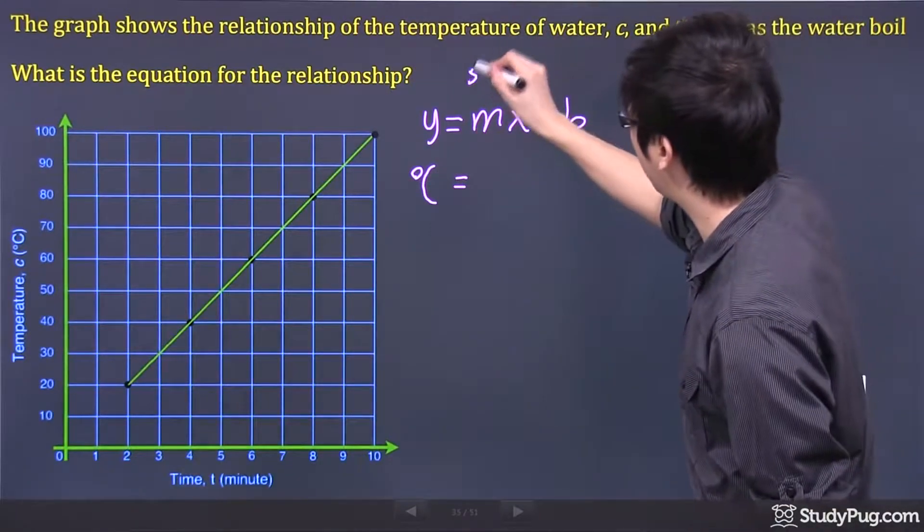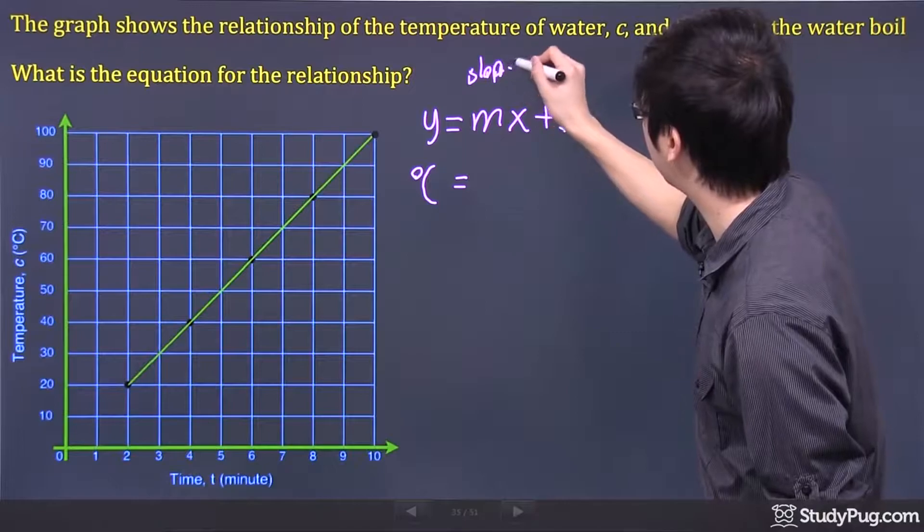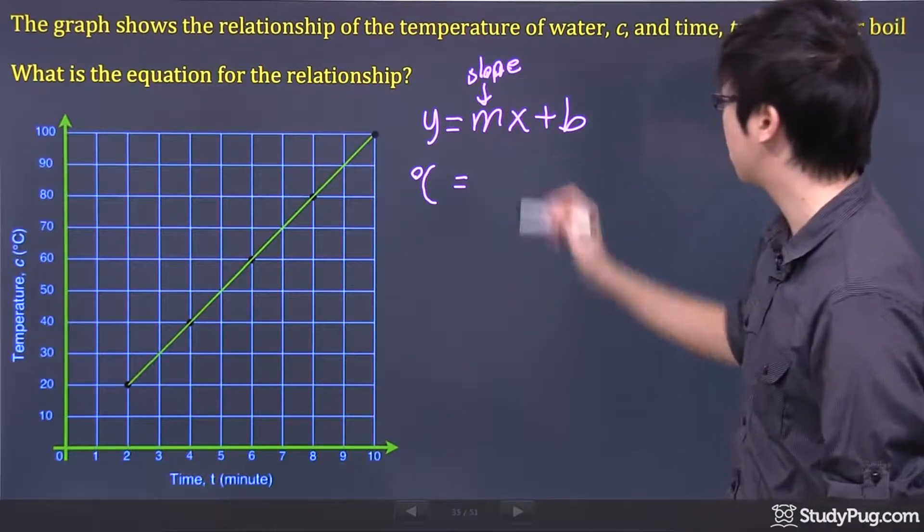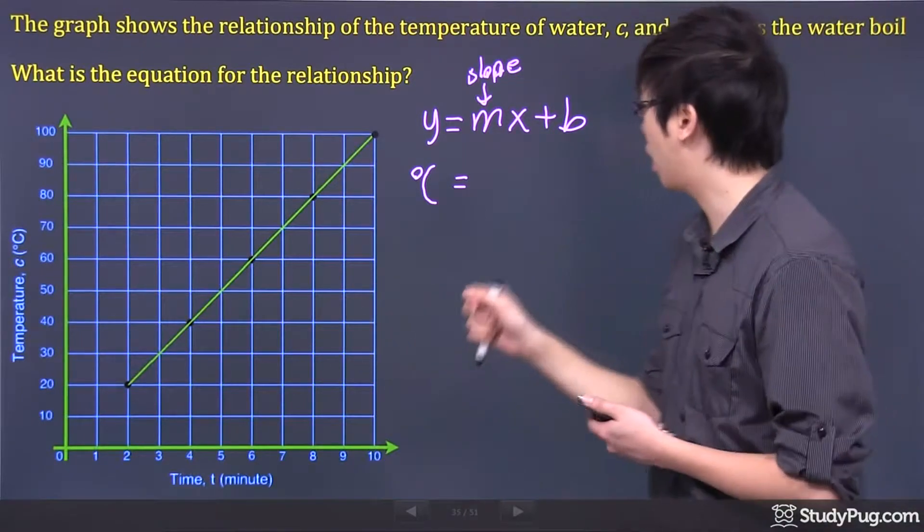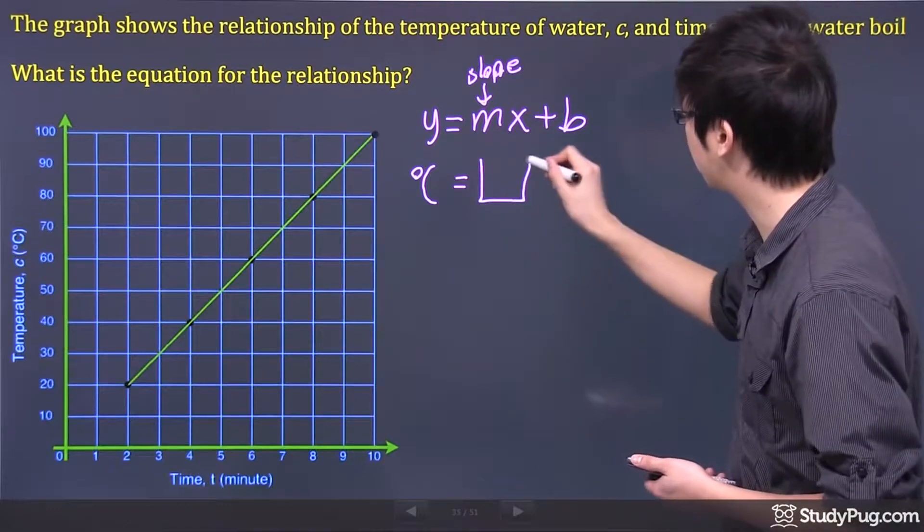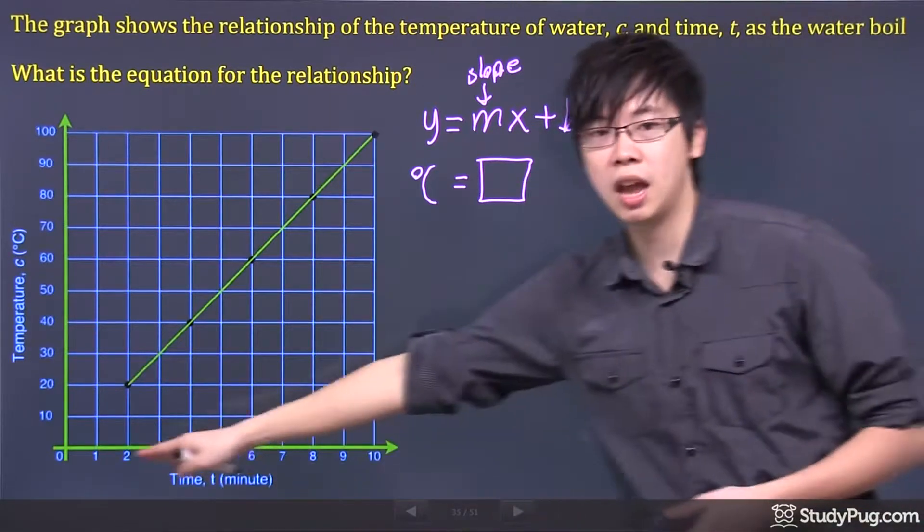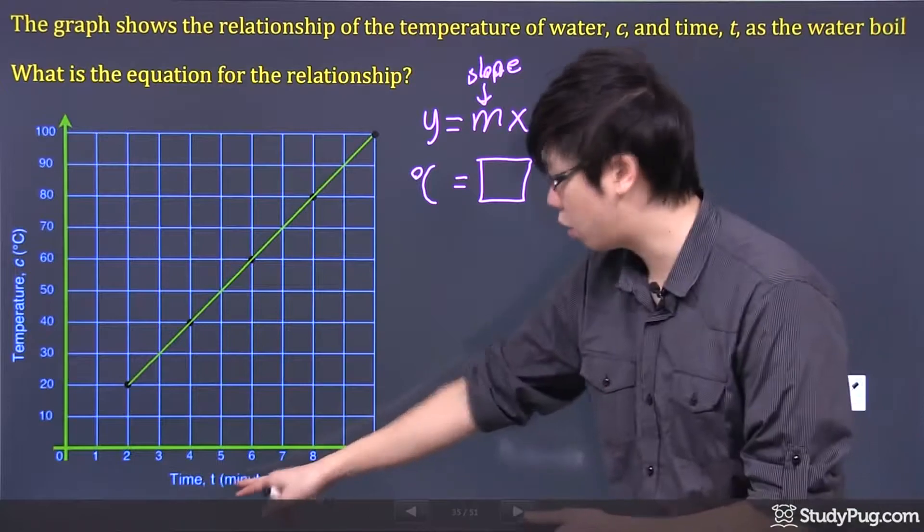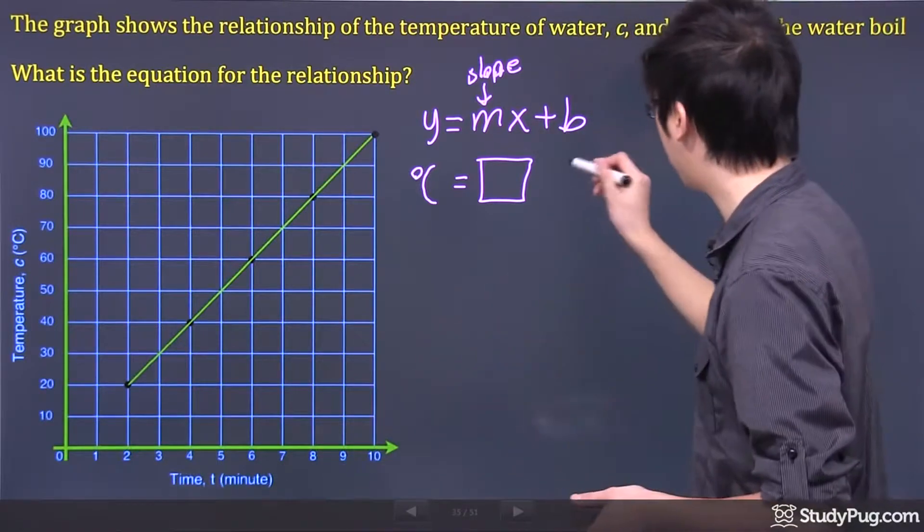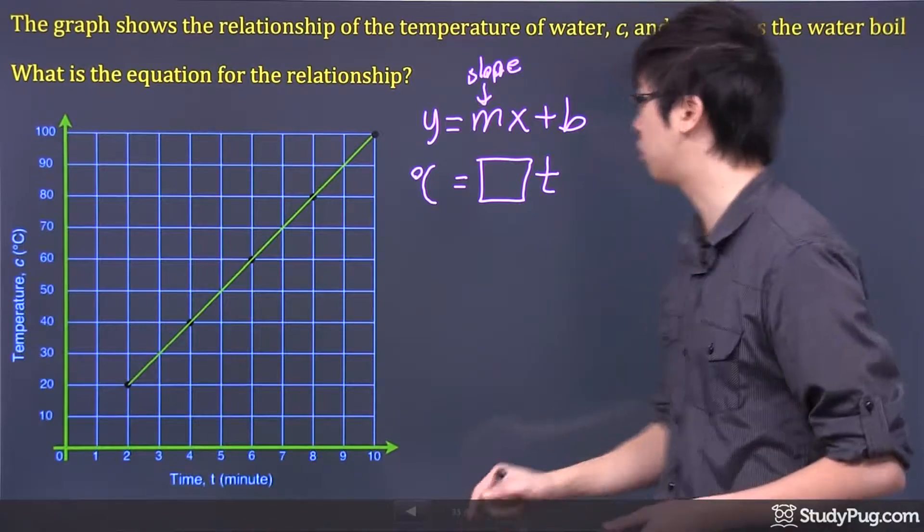The m, if you don't remember what m is, it's the slope of the graph. So we're going to figure out the slope later. And the x, so let me draw a box for the slope, and the x is the x-axis. So it's the time, and we just use the variable t. But remember, it's in terms of a minute for this question.